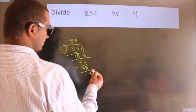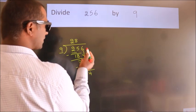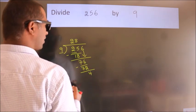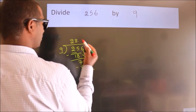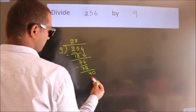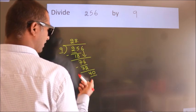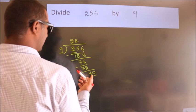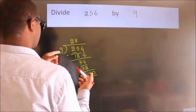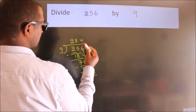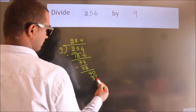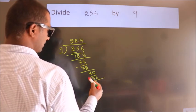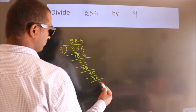After this, no more numbers to bring it down. So what we do is we put a dot and take 0. So 40. A number close to 40 in the 9 table is 9 times 4 equals 36. Now we subtract. We get 4.